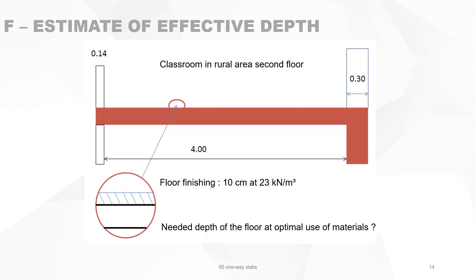We will now give an example of how to estimate the effective depth of a one-way slab. We have a cross section of a classroom in a rural area, second floor. There is a beam, brickwork, and masonry supports. The floor is a concrete slab with a floor finishing of 10 centimeters with a unit weight of 23 kilonewton per cubic meter. We want to find the needed floor depth using the criterion of optimal use of materials.